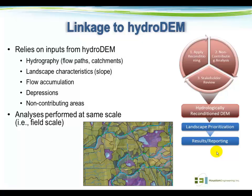The processes I'm talking about rely directly upon a hydrologically reconditioned DEM having been created. Remembering the figure that Zach showed during his presentation, he talked us through the process to get to this hydrologically reconditioned DEM. I'm going to assume that work has been done and we're building upon it to do some different analyses for landscape prioritization. The inputs from the HydroDEM we're relying on are the hydrography — the flow paths and catchments — basically indications of how water moves over the landscape.